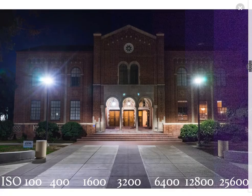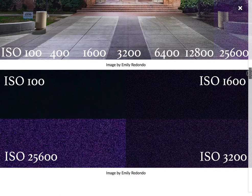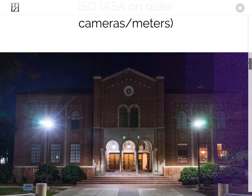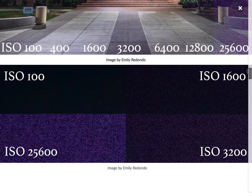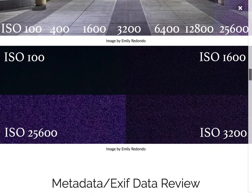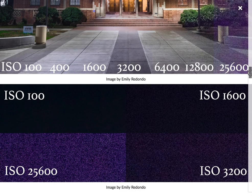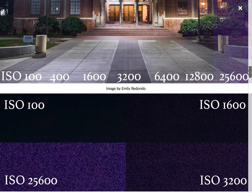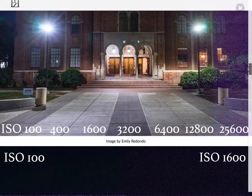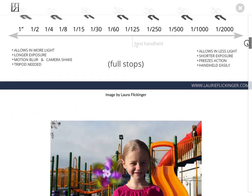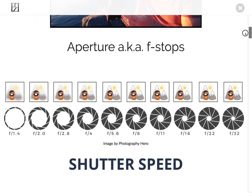Here is a blown-up version of the same corner of the image at each ISO: 100, 1600, 3200, and 25,600. You can see that you start getting noise once you zoom in, and it gets worse and worse. So those are the basics. We will go over this again and again — get used to these terms: ISO, shutter speed, and aperture.